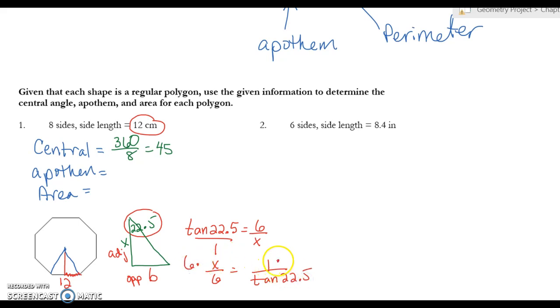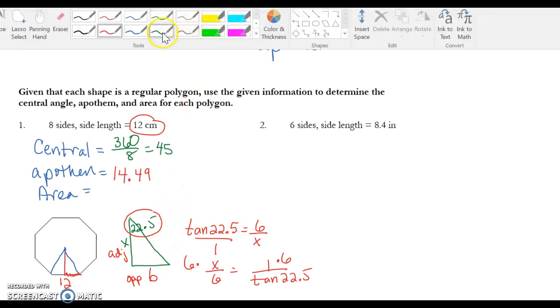And then times by 6, and so I end up getting—make sure your mode's in degree. 6 divided by the tangent of 22.5, which is 14.49. That's the hardest part, but you're always going to use tangent because you're always going to be looking for either the opposite or the adjacent.